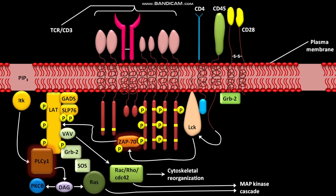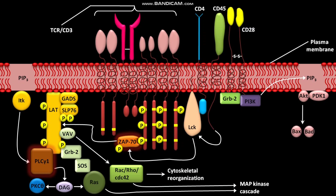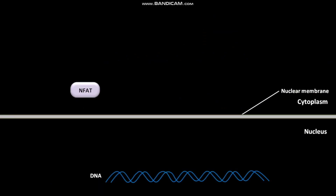PI3K translocates to the cytoplasmic side of CD28 and forms PIP3. The formation of PIP3 induces localization of PDK1 and AKT to the plasma membrane. AKT then induces antiapoptotic proteins BCL and BAD, which cause cell survival.